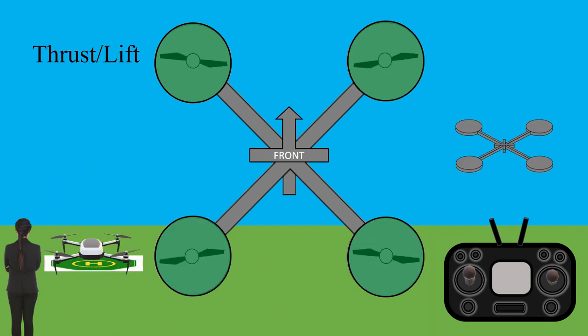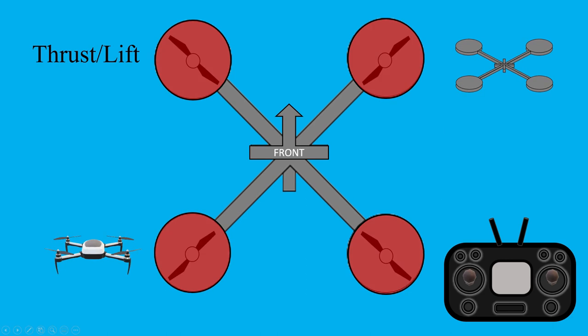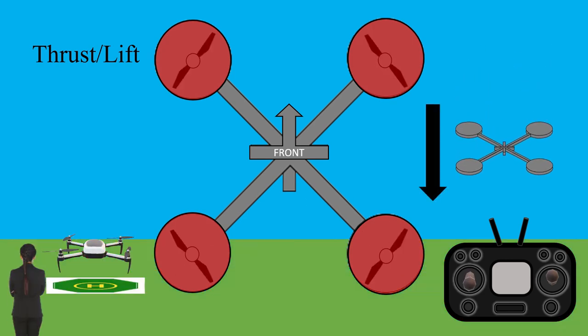The total thrust remains the same and the drone can maintain a steady altitude, even if it's altering the direction of which it's flying.